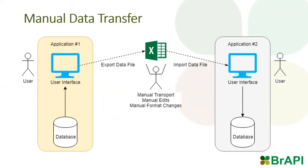Many of the system integrations we see in today's breeding software domain rely on manual data transfer. Manually transferring data from one system or tool to another can take a lot of effort and is prone to human error. In this diagram, we can see an example of manual data transfer where a user is required to export from one system, usually into an Excel or CSV file, manually transport that data from one system to another, and then import it into the second system. This process can be slow and error prone, with manual edits and format changes as the export file and import template may be slightly different.